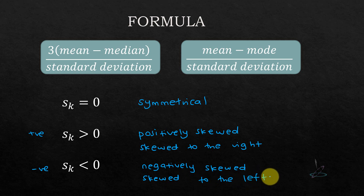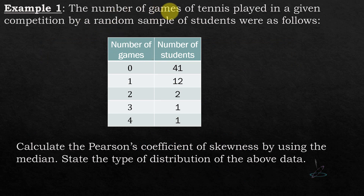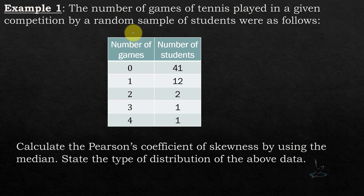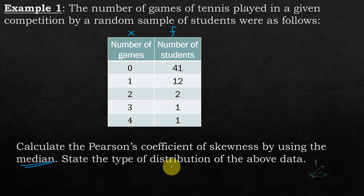Let us try an example. The number of games of tennis played in a competition by a random sample of students is given in a table: number of games on the left (x) and number of students on the right (f). This is ungrouped data with a frequency distribution. The values are: 0→41, 1→12, 2→2, 3→1, 4→1. Calculate the Pearson coefficient of skewness using the median.